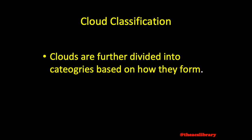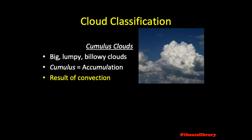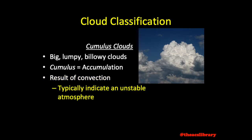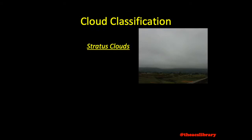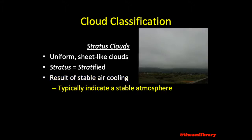The high, middle, and low clouds are further divided into categories based on how they form. Cumulus clouds are the big, lumpy, billowy clouds we all drew as kids. The name means accumulation — a big heap of clouds. They are a result of convective updrafts, and their presence is a great indicator of an unstable atmosphere. Stratus clouds are characterized by a uniform sheet-like appearance. The name means stratified or layered. These clouds are typically a result of a stable layer of air cooling to the dew point and are generally associated with a stable atmosphere.